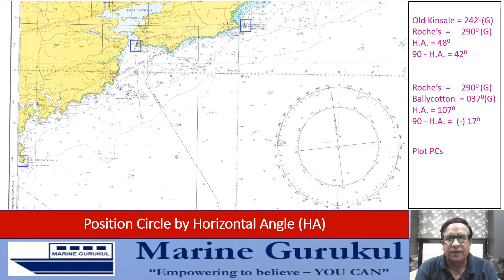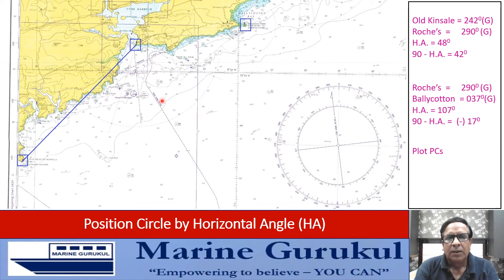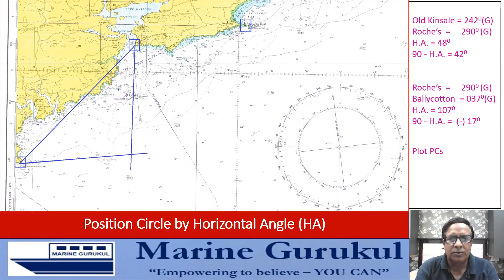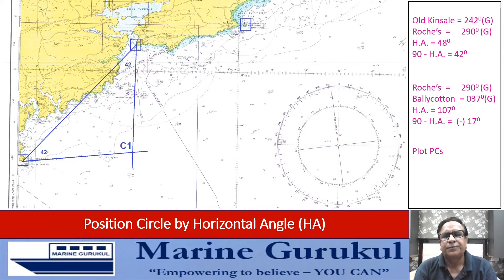We now draw the position circles. For the first pair — Roches Point and Old Head of Kinsale — we draw the baseline. The landmass is on one side, so the vessel lies on the sea side. Since the horizontal angle is less than 90°, the complement angle of 42° is drawn on the side where the ship lies, at both ends of the baseline. Where these two angles intersect at C1 is the center. With C1 as center and C1 to either object as radius, we draw the position circle only on the side where the ship lies.